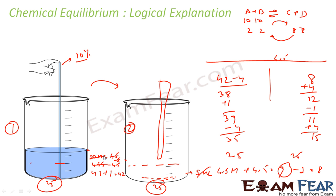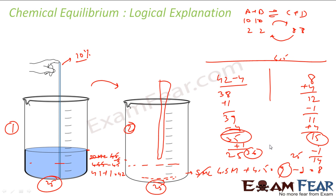It's dynamic because you're constantly moving water from beaker 1 to beaker 2 and back, yet the amounts stay the same. Continuing from 35 and 15: 1 ml back gives 36 and 14; then 4 ml across gives 32 and 16 — the values keep changing but converge to 25:25. That's exactly what equilibrium is: both the forward and backward reactions keep happening, but at equal rates.